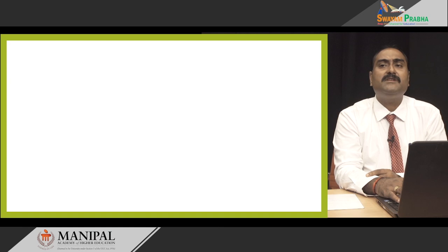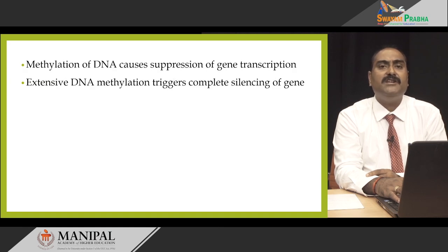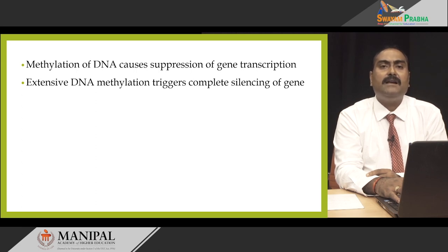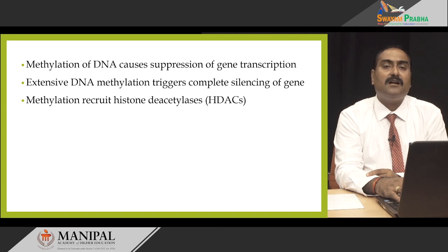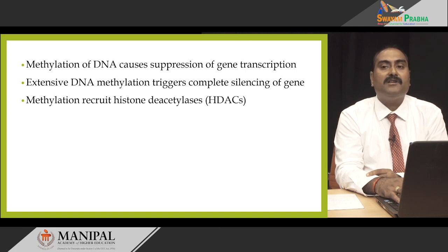Methylation of the DNA causes suppression of gene transcription. Excessive or extensive DNA methylation triggers complete silencing of the gene. How does it bring about complete silencing? Methylation is said to recruit HDACs, or histone deacetylase enzymes. The function of these histone deacetylase enzymes is to remove the acetyl groups. Once the acetyl groups are removed, the charges on the lysines are regained — no longer shielded — as a result of which the positive charges of the lysines now interact with the negatively charged phosphate backbone of the DNA, making the interaction much stronger and the DNA more tightly coiled around the histone octamer, thereby limiting accessibility to the transcriptional machinery.